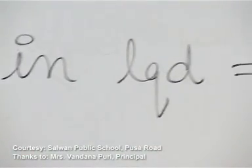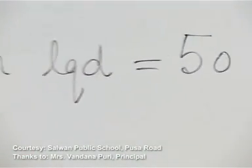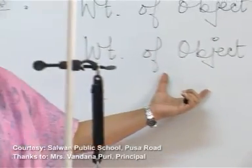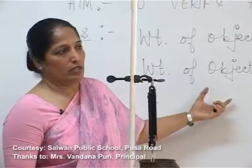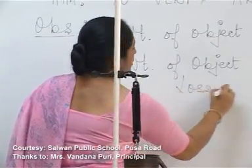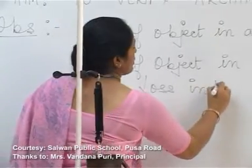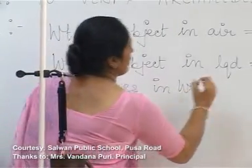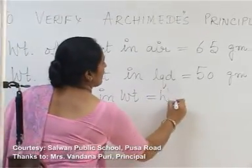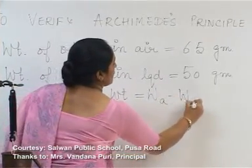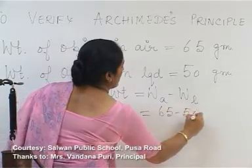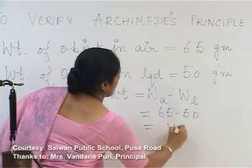There is a loss in weight when the object is dipped in the liquid, and this loss is due to the buoyant force. The loss in weight is the difference between the two readings: weight in air minus weight in liquid, that is 65 minus 50, which equals 15 grams.